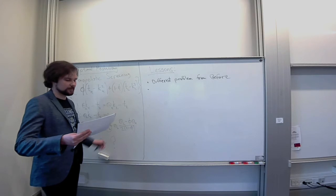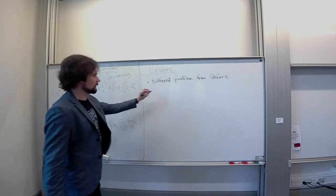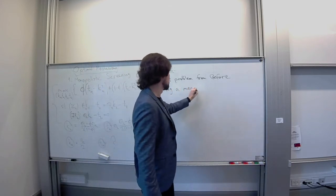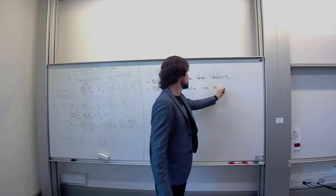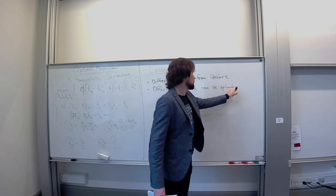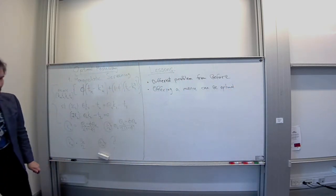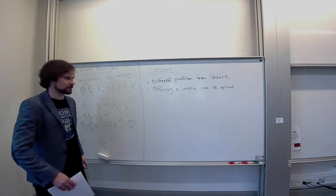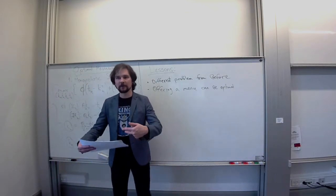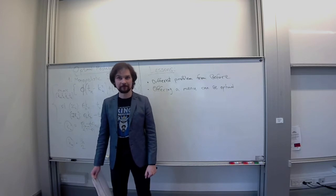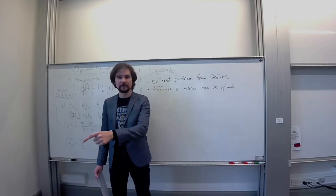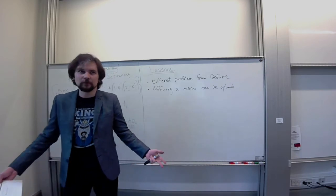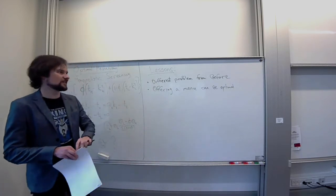Now, the insight about the qualitative conclusion about the selling problem. The first trivial one is that offering a menu of options can be optimal. And is, indeed, typically optimal. In the sense that if you are a seller and you are designing, you are choosing which price to set, you might want to not just set a price per unit, but you can set some non-linear pricing menu. Saying that, this amount costs this much, that amount costs this much and so on.